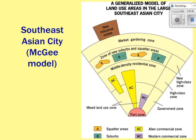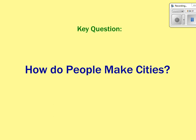In the Southeast Asian McGee model, the port is the central feature, since these cities are located on the edge of a peninsula or island. There are squatter zones near the port for poor residents, and foreign investment has established factories and commercial manufacturing zones. There's also a bit more middle and upper class presence, reflecting Southeast Asia's status as more semi-peripheral rather than strictly peripheral.